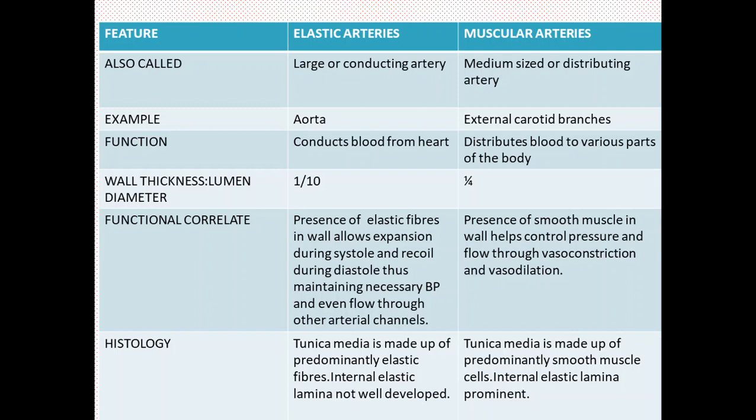The wall thickness to lumen diameter ratio is 1:10 in elastic arteries and 1:4 in muscular arteries. The presence of elastic fibers in the walls of elastic arteries allows expansion during systole and recoil during diastole, thus maintaining blood pressure and even flow through the arterial channels. The presence of smooth muscle in the wall of the muscular artery helps control the pressure and flow of blood through the mechanisms of vasoconstriction and vasodilation.